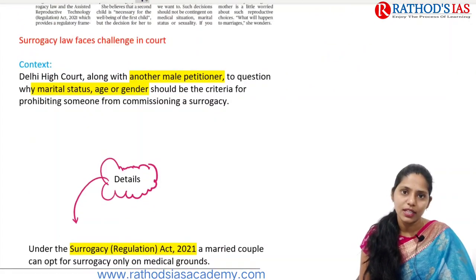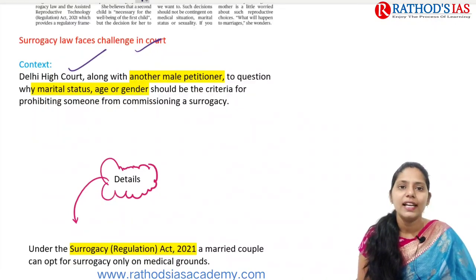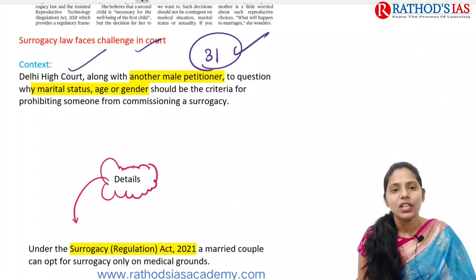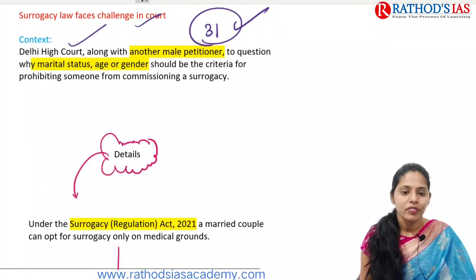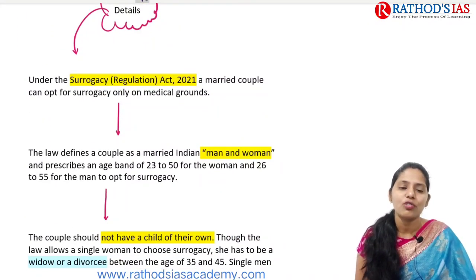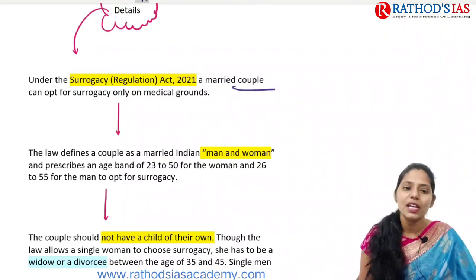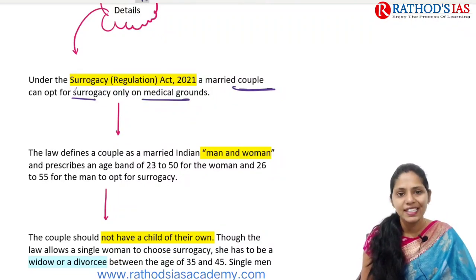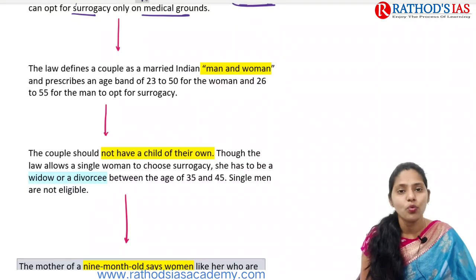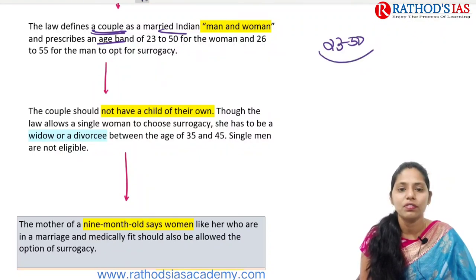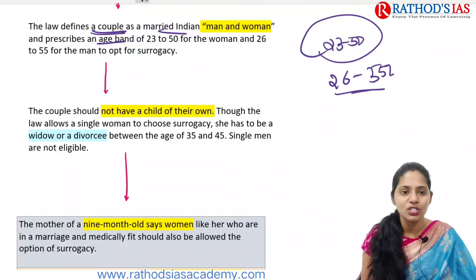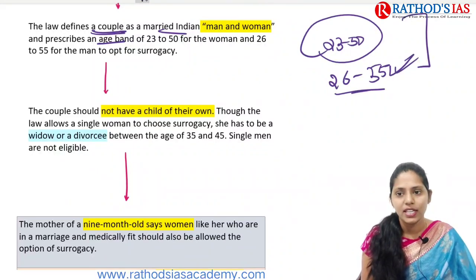In the Delhi High Court, a 31-year-old woman along with a male practitioner mainly started questioning whether marital status, age, or gender should be the criteria for prohibiting someone from commissioning a surrogacy. The Surrogacy Regulation Act of 2021 defines a couple as a married Indian man and woman, with a prescribed age band of 23 to 50 years for women and 26 to 55 years for men.